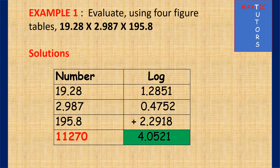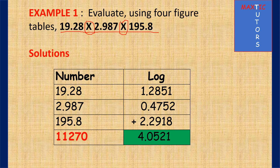Example 1: using four-figure tables, evaluate 19.28 × 2.987 × 195.8. Set your table with columns: number and log. Since everything here is multiplication, write the three numbers. 19.28 has 2 digits before decimal, so characteristic is 2−1=1; from four-figure table, 19 under 2, difference 8, gives 1.2855. 2.987 has 1 digit, characteristic 0; 29 under 8, difference 7, gives 0.4752. 195.8 has 3 digits, characteristic 2; 19 under 5, difference 8, gives 2.2918. Add all together to give 4.0521 (approximately).